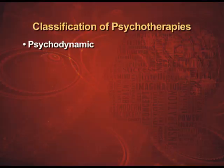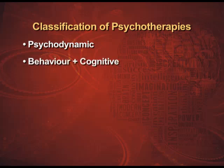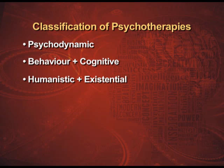Moving on to the classification of therapies — all the different kinds of psychotherapies are based on the different psychological approaches we have studied. We'll understand them over six parameters and get a comparative analysis of the different therapies. The first therapy is psychodynamic therapy. We'll understand it from the parameters, then move on to behavioral therapy along with cognitive therapy, and then humanistic existential. The first parameter is: what is the cause of the problem?